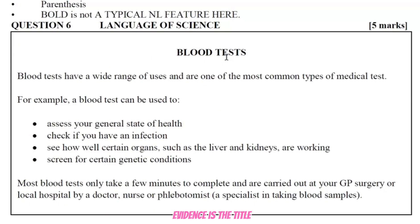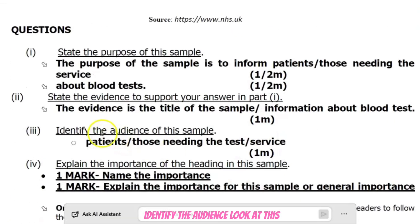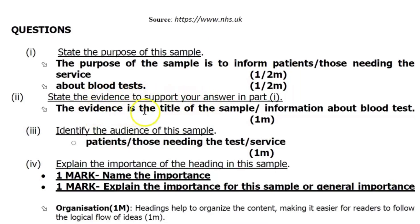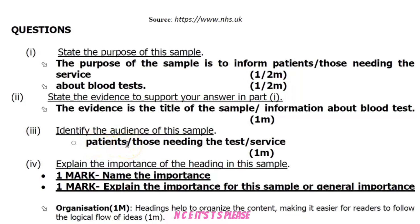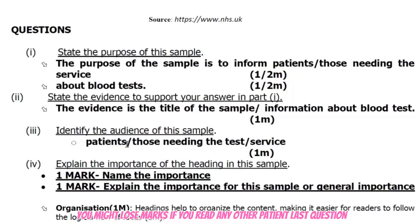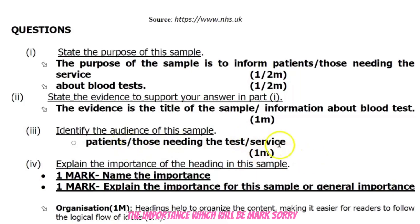Question two — state the evidence. The evidence is the title: 'Information about blood tests.' Question three — identify the audience. Be specific: the patients or those needing the test or service. Students, please take note of spelling: the noun 'patients' is P-A-T-I-E-N-T-S, not to be confused with the abstract noun 'patience' P-A-T-I-E-N-C-E. You may lose marks for this spelling error.